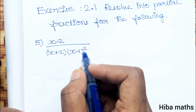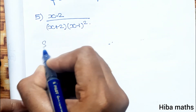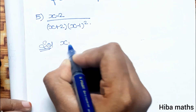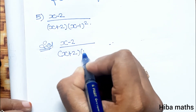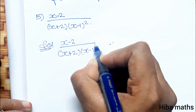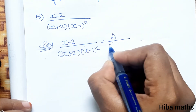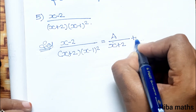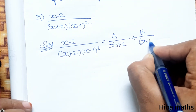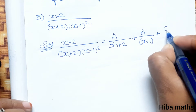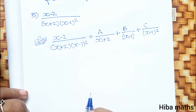The repeated factor has power 2, so we will have 3 terms in the decomposition. We write: A divided by x plus 2, plus B divided by x minus 1, plus C divided by x minus 1 whole square. There are 3 terms in total. Next, we will cross multiply.